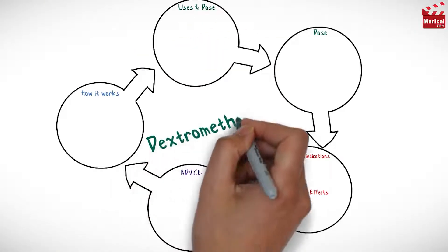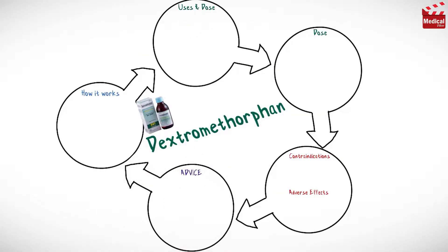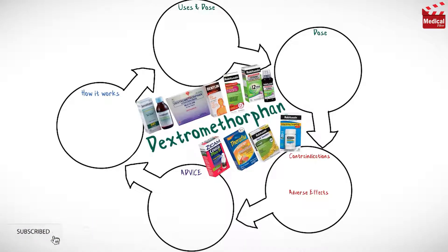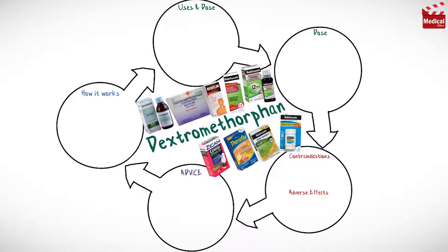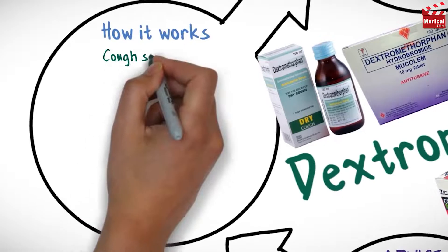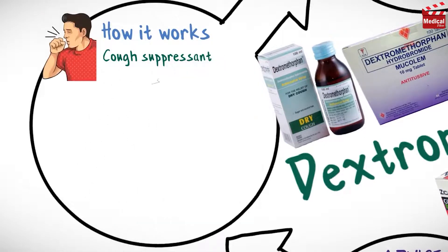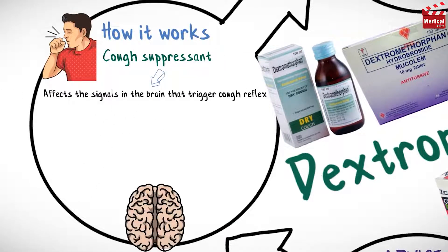In this video we'll briefly discuss what is dextromethorphan, how it works, what it's used for, the dose, side effects, contraindications, and precautions. Dextromethorphan is a cough suppressant — it affects the signals in the brain that trigger the cough reflex.